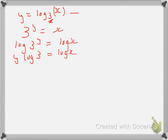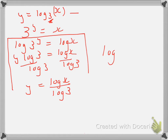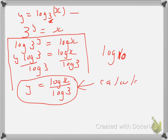Now, if I want to get y equals, I simply divide by log 3, and I'll get y is equal to log x divided by log 3. This is all base 10. Once we get to this point, we're dealing with logs of base 10 only. So this thing that you get at the end is log base 10 of x divided by log base 10 of 3. You can put that into your calculator and it will put up a graph for you.